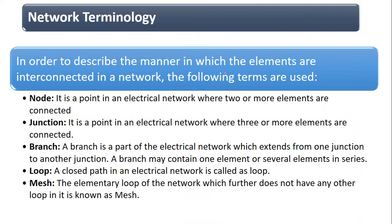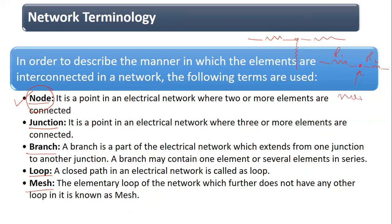Now let us discuss some basic terms used in electrical networks. To start with, we have the term node. A node is that point in an electrical network where two or more elements are connected. For example, if two resistances R1 and R2 are connected to one another at a particular point, that point is called a node.